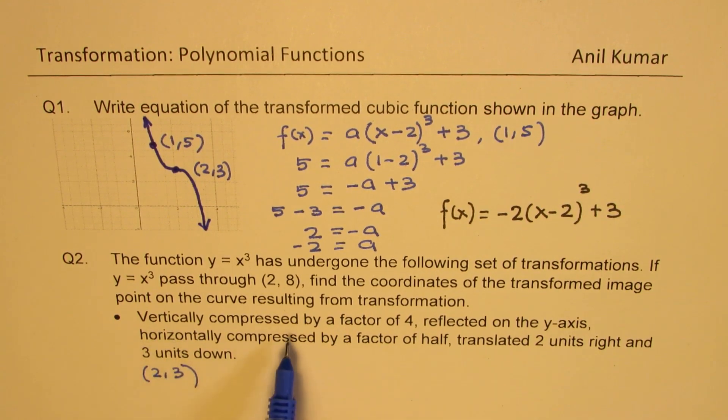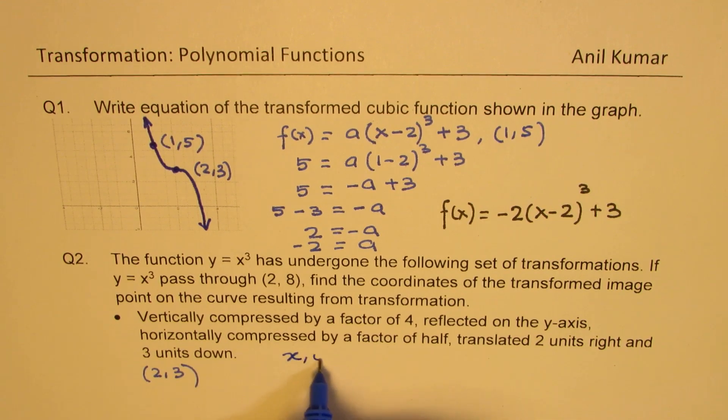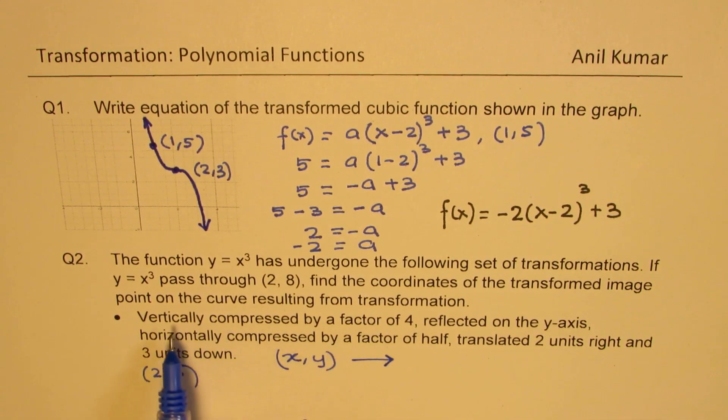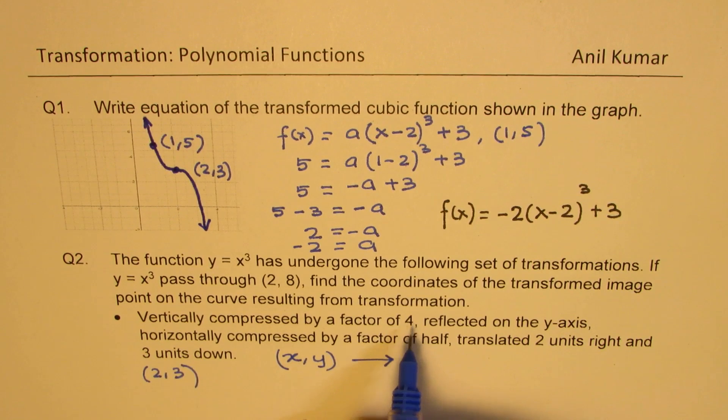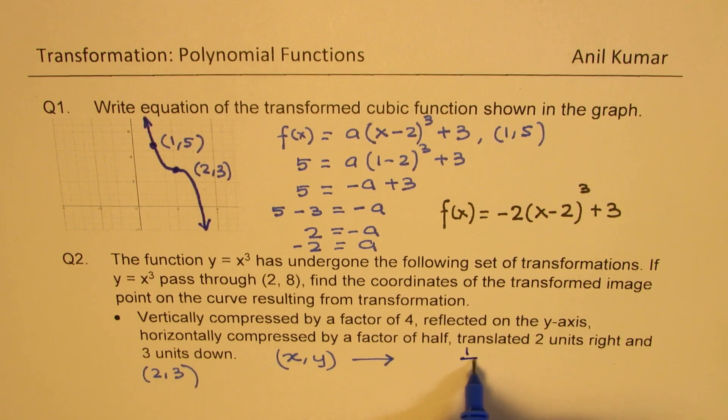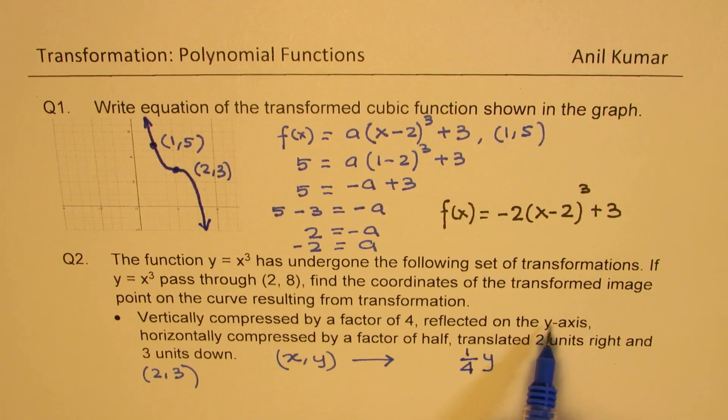Vertically compressed by a factor of 4. So let's consider a general point. Then we'll work on 2, 8 also. So if I have x, y as any general point, in that case, when you say vertically compressed by a factor of 4, means the y value will be compressed vertically, means you have to divide by 4. So we get 1 over 4 of the y value. Reflected on the y axis,